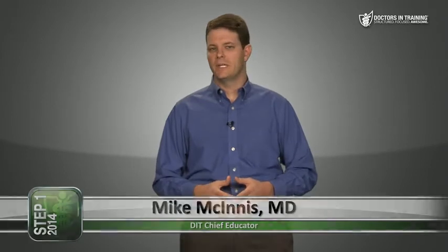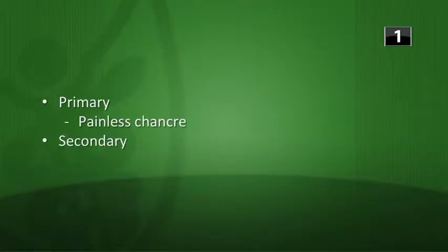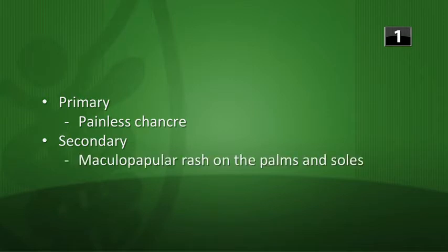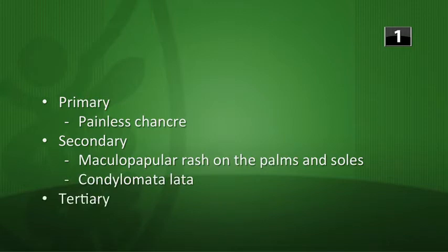This is the three-question warm-up for biochem 15. First question: what are the presenting dermatologic findings with primary, secondary, and tertiary syphilis? For primary syphilis it's a painless chancre. For secondary syphilis it's going to cause a maculopapular rash on the palms and the soles, and also condyloma lata.